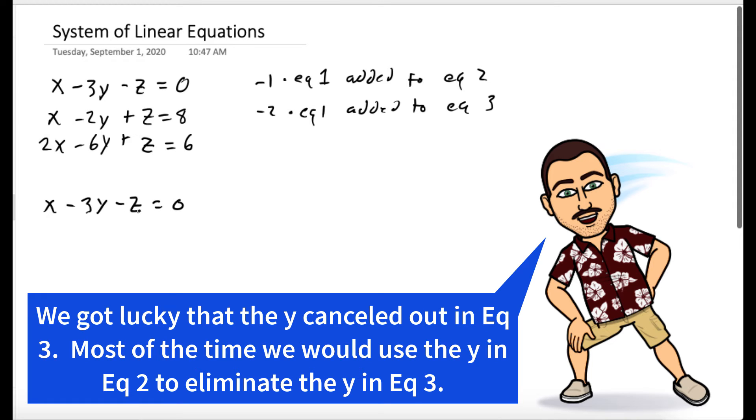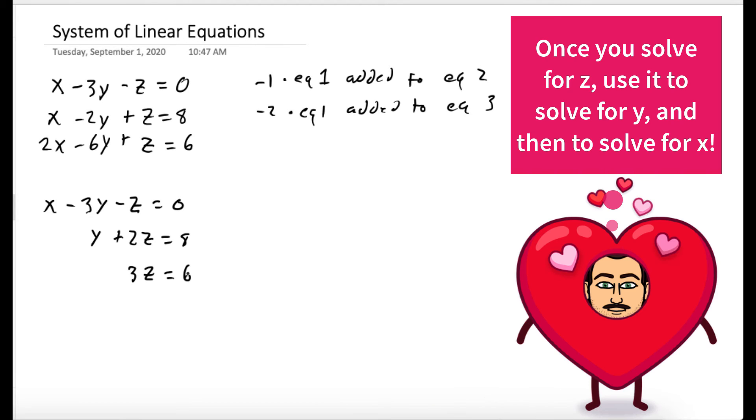So our top row stays exactly the same. And now when we add negative 1 times equation 1 to equation 2, we get y plus 2z equals 8. And when we do negative 2 times equation 1 to equation 3, the x's cancel. And you'll see the y's also cancel. We're just left with 3z equals 6.